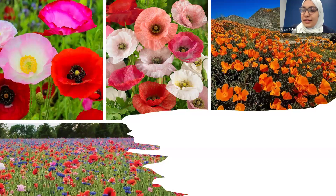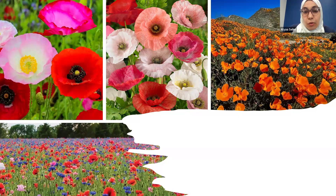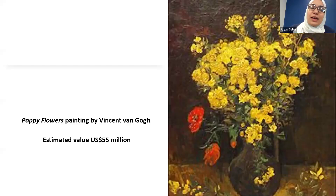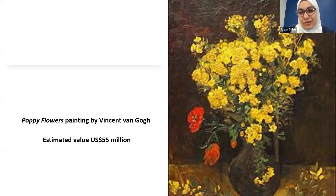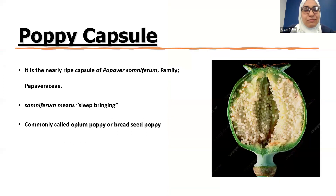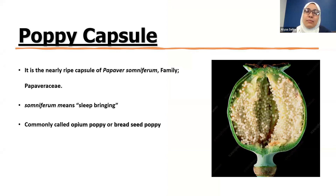Look at these astonishing fields with amazing colorful flowers. Those are the fields for opium poppy, and these beautiful flowers inspired the great painter Vincent van Gogh to draw one of his iconic paintings — the Poppy Flowers.